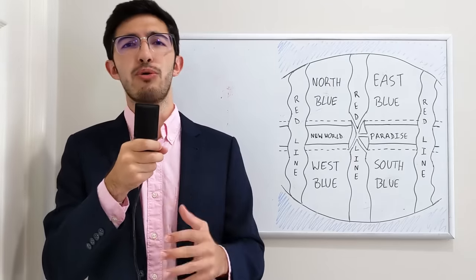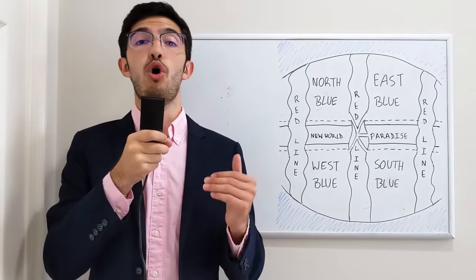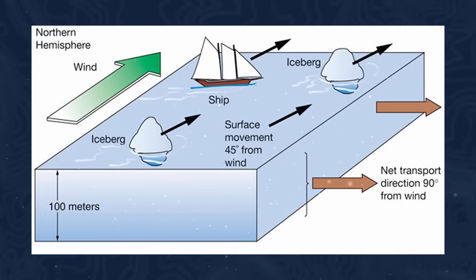Now, in reality, seas and oceans do have periodic periods of calmness, but on average, they will always flow in one direction or another, and this is usually dictated by the wind currents that lie above them.